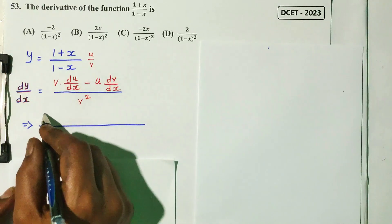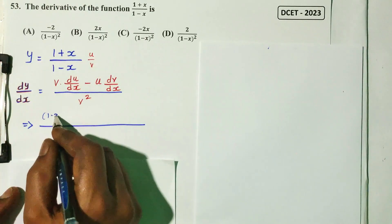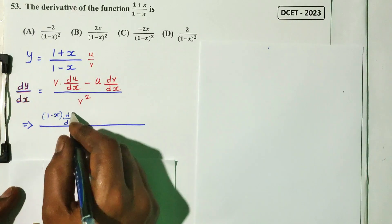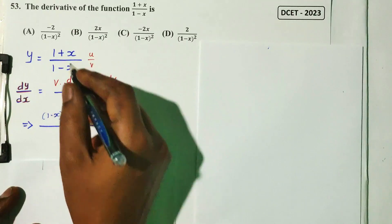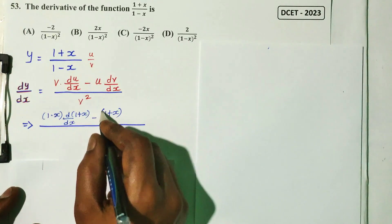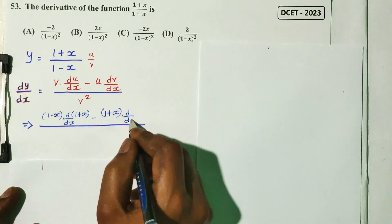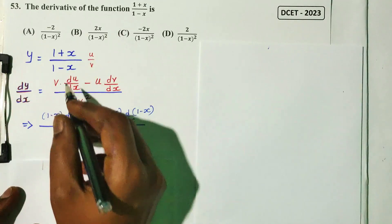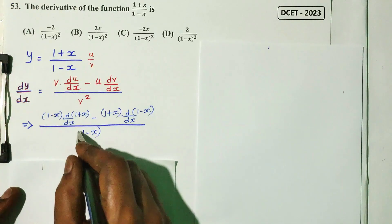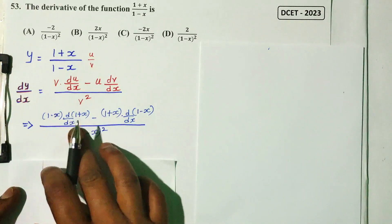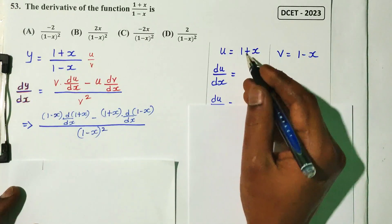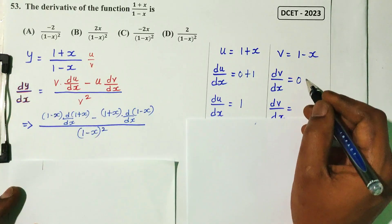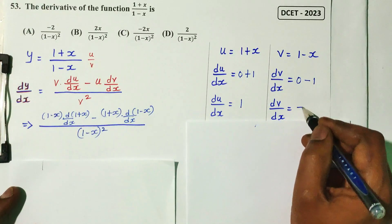Applying the quotient rule: v = 1 minus x, u = 1 plus x. The differentiation of 1 is 0, and x differentiated is 1, so d/dx(1+x) = 1. For (1-x), differentiation gives minus 1.